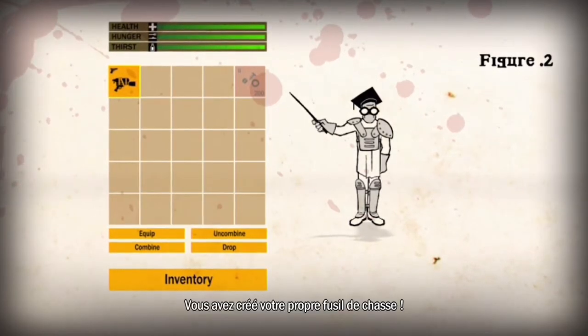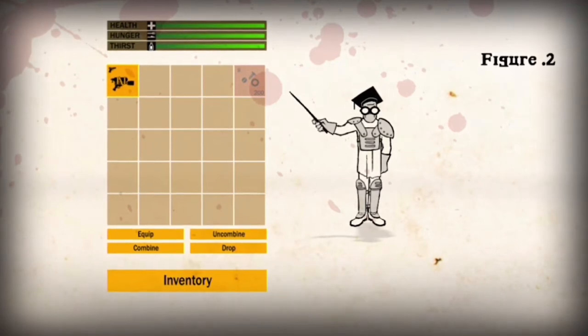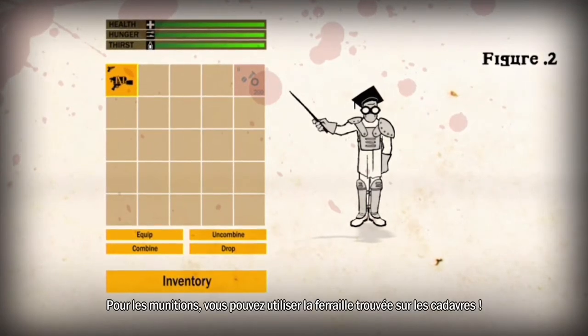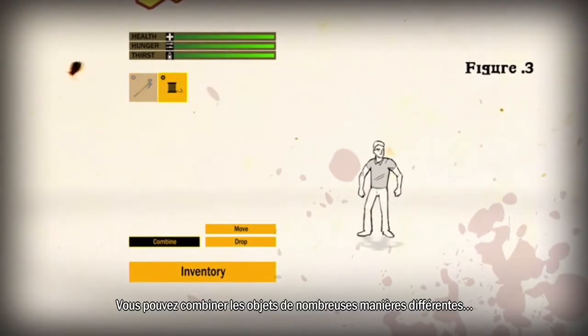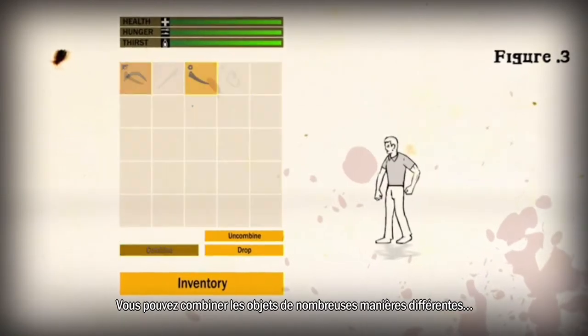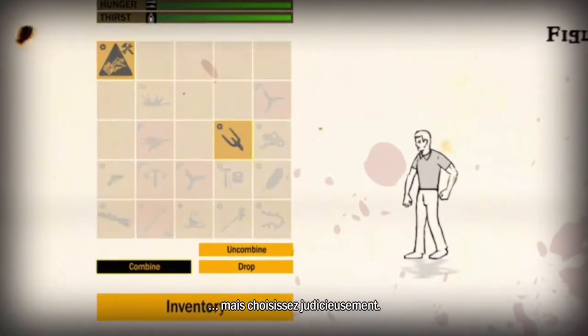You have created your very own shotgun. For ammunition, metal scrap found on dead bodies will be okay. There are many ways you can combine items, but choose wisely.